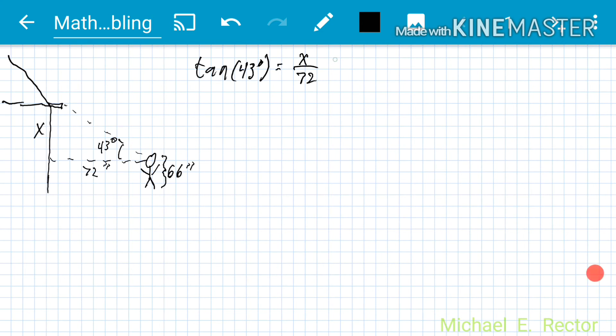We need to cancel out the 72 on that side, multiply it to this side, gives us 72 inches times tan of 43 degrees equals X. And when you enter this into your calculator you end up with 67.141 inches.